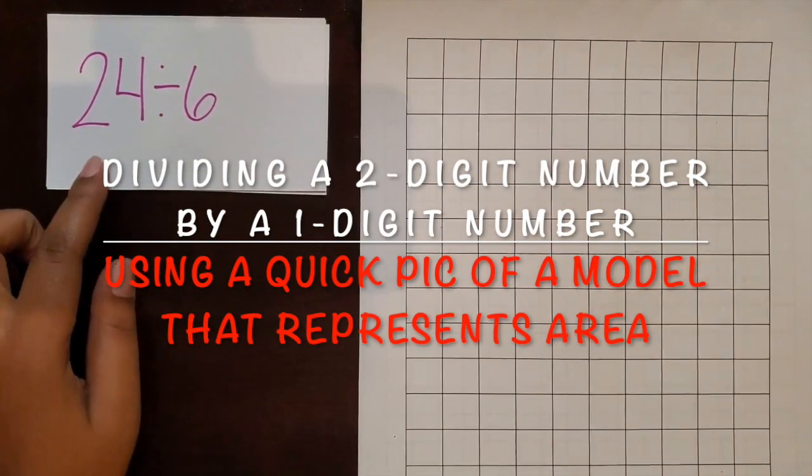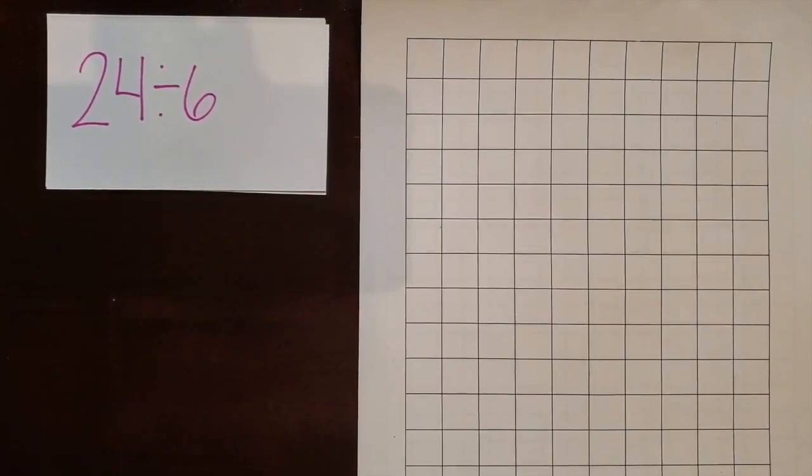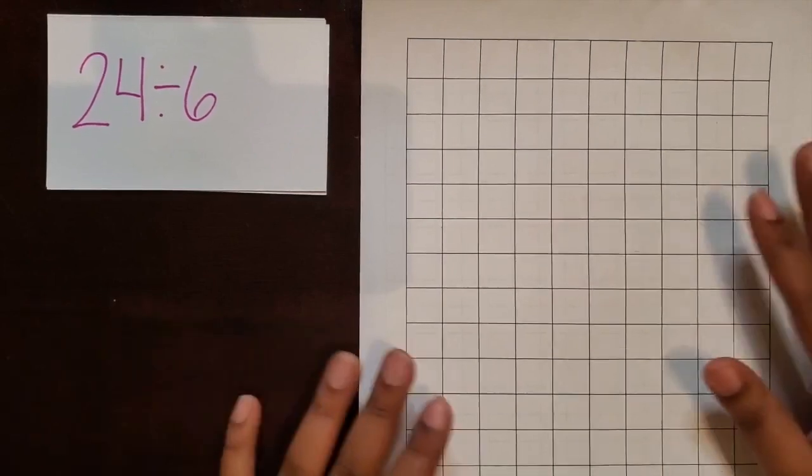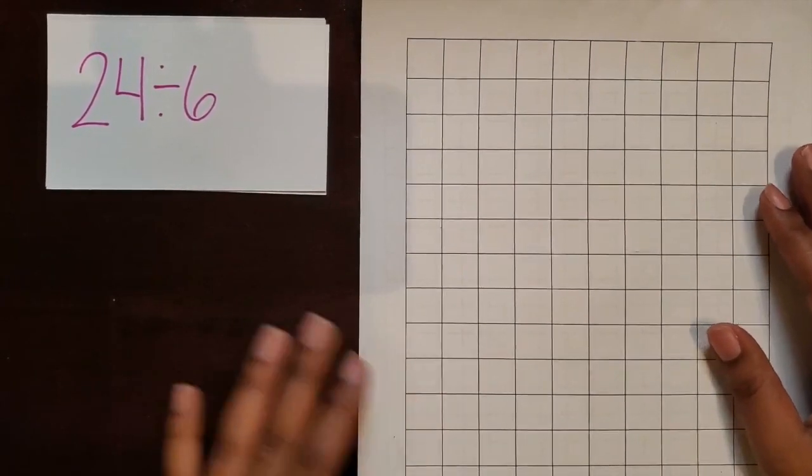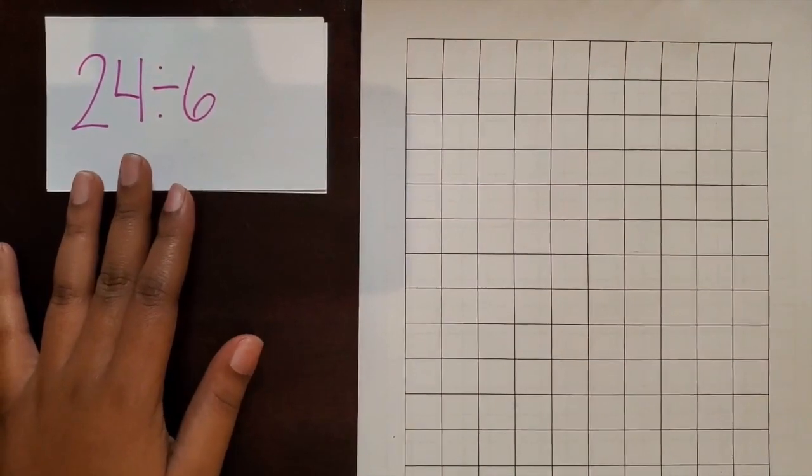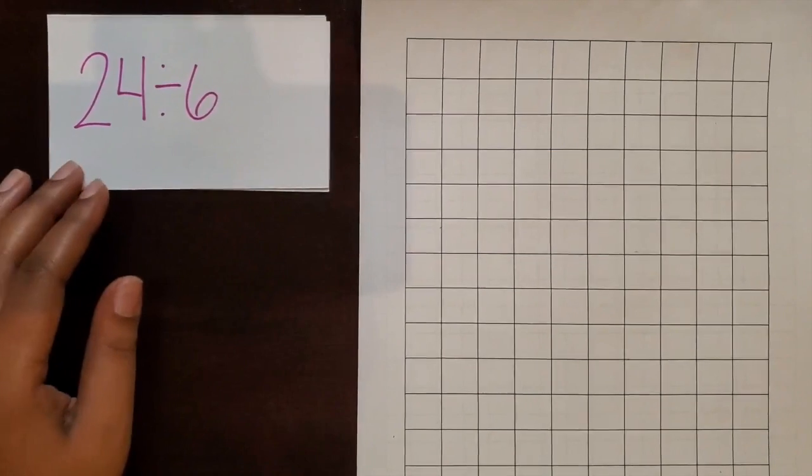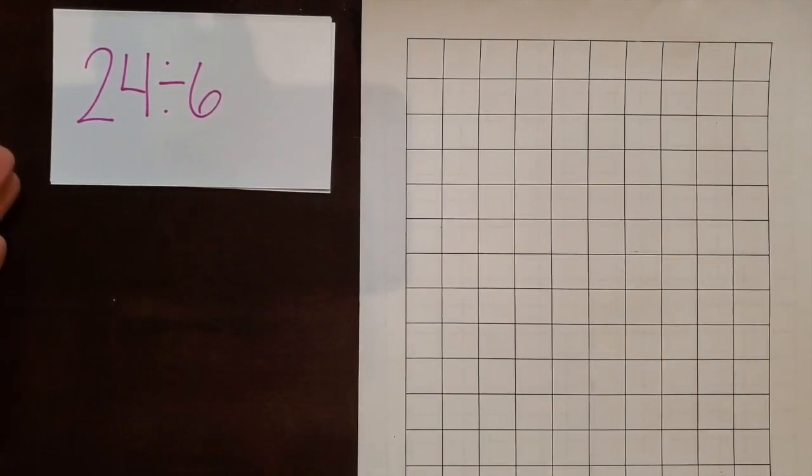We are going to divide a two-digit number by a one-digit number by using a quick picture of a model to represent area. For this example, I will be using grid paper. We know with just having the expression there's no context or information for each of these numbers. So we're going to relate this expression to finding the area or finding the length and width of an area.